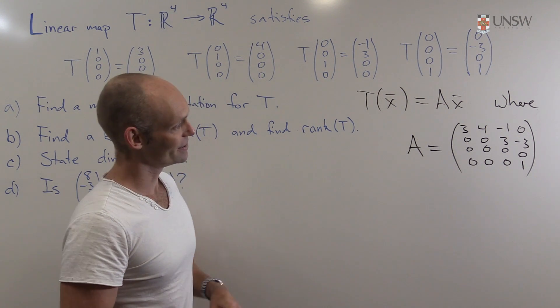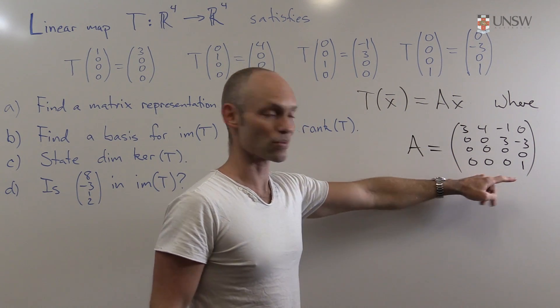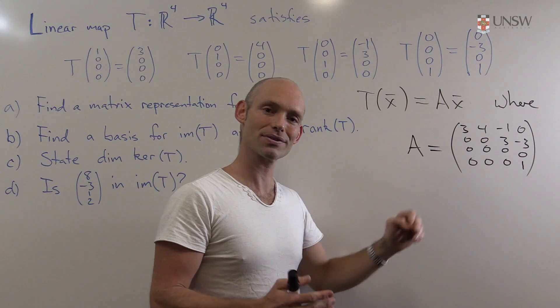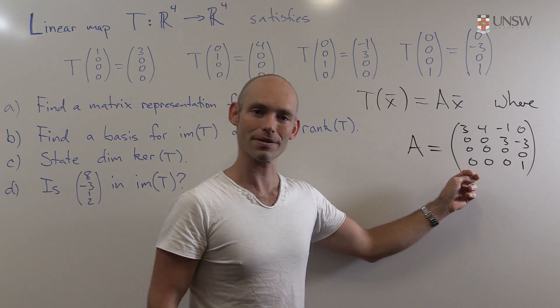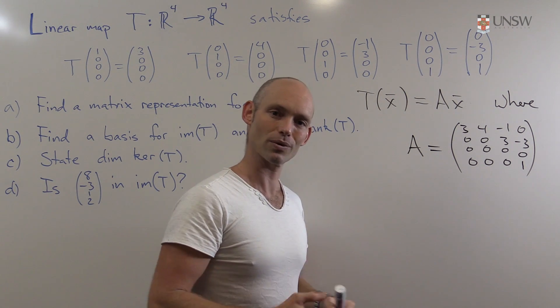Now in general, you'd use row reduction, and try to see which columns were leading, and that would give you the solution. But here it's actually quite simple. We see that the first two columns, they are parallel, so they're linearly dependent. So we only need to choose one of them if we're looking for a basis.